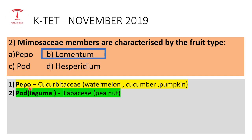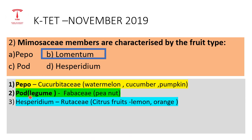Pod (or legume) is the fruit type of the Leguminosae (Fabaceae) family. Peanut also belongs to the Fabaceae family. For hesperidium — this is the characteristic fruit type of the Rutaceae family, seen in citrus fruits like lemon and orange.